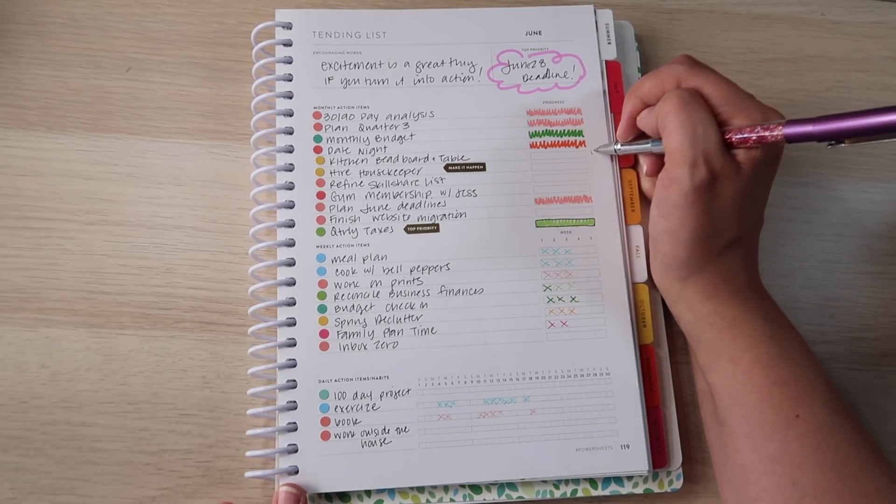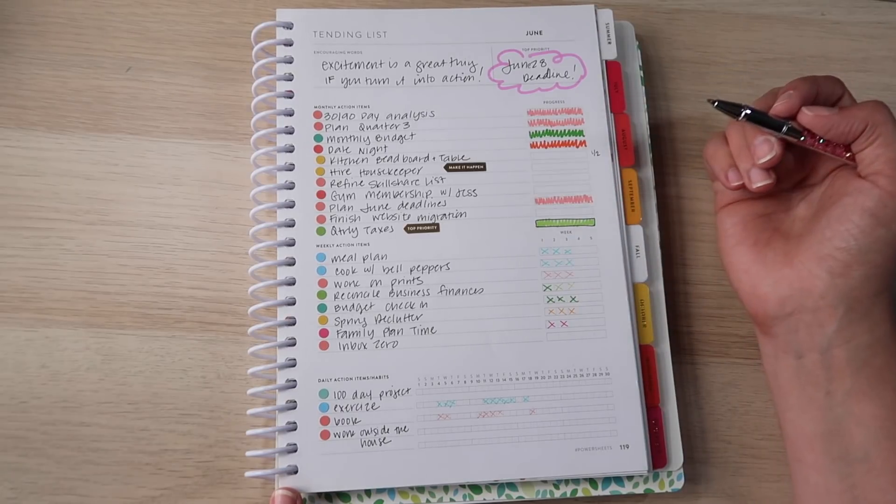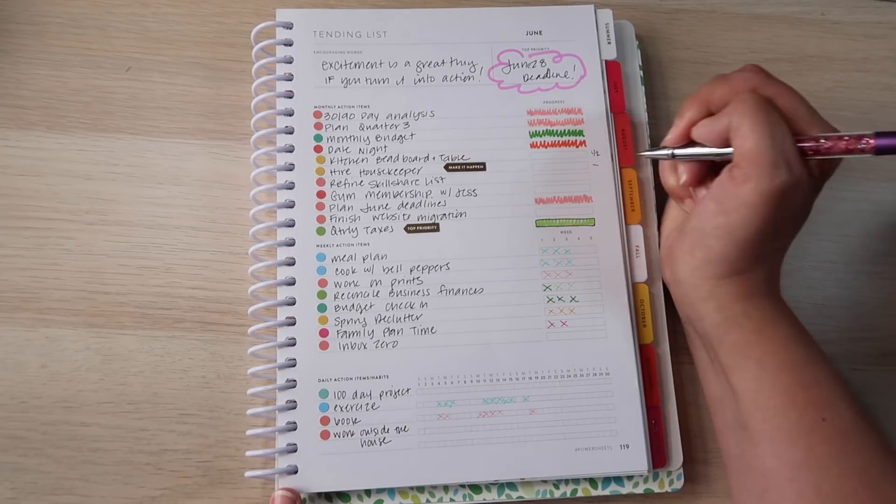So this may get about half done, I'm thinking, by the end of June. So I'm going to put half here just to see where my predictions go. Hiring a housekeeper. I really need to do that and we just have not had the time to figure it out. So that's probably not going to get done at all.